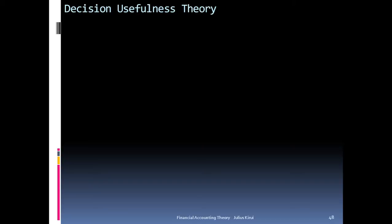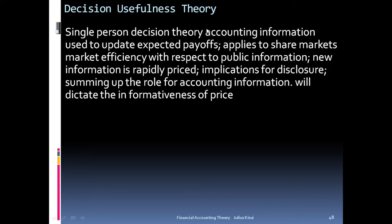Efficient market theory connects to decision usefulness theory and single person decision theory. Accounting information is used to update expected payoff and applies to share markets. Market efficiency with respect to public information means new information is rapidly priced. This is applicable for disclosure. Information will dictate the prices of every share in the market.